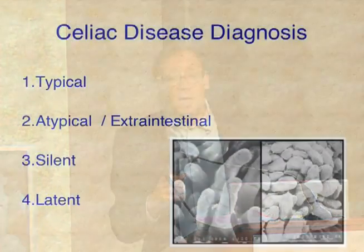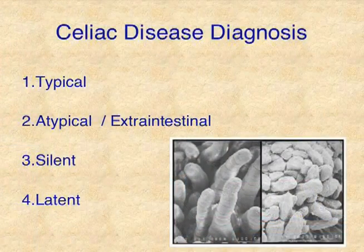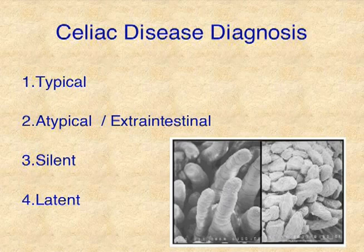We're now thinking of celiac disease in terms of four different types: the typical presentation, atypical — which is mostly extra-intestinal manifestations of celiac — and the silent and the latent.